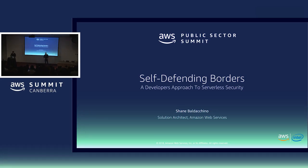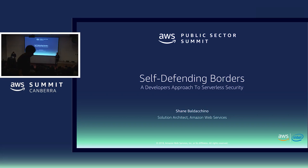In today's modern world, your border is the interface between yourself and the consumer. Businesses today not only need an online presence, but need to ensure they can deal with an ever-increasing hostile environment. But is traditional security enough, given that modern-day attacks mainly focus at the application layer? In this session, I'll illustrate how you can leverage AWS security services in conjunction with the wider AWS platform to create an architecture that dynamically responds to what is occurring in your environment, allowing you to build a self-defending border to protect your online assets.